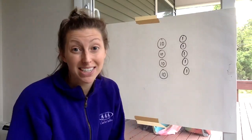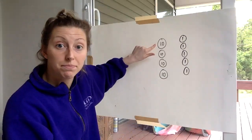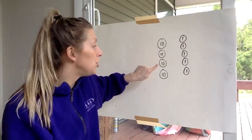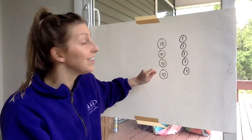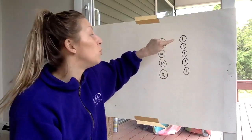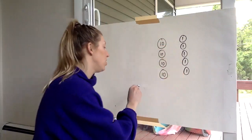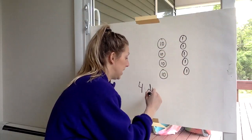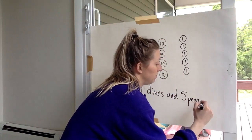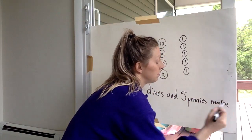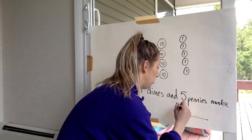So everyone get ready because you're going to count by tens with me because you all are amazing counters. We're going to start with 10. We have 10, 20, 30, 40. Stop. Now we're going to take 40. We're going to count on 41, 42, 43, 44, 45. Four dimes and five pennies make 45 cents.